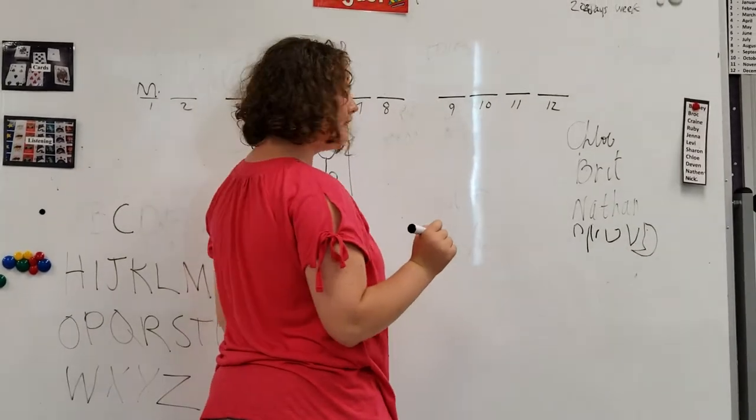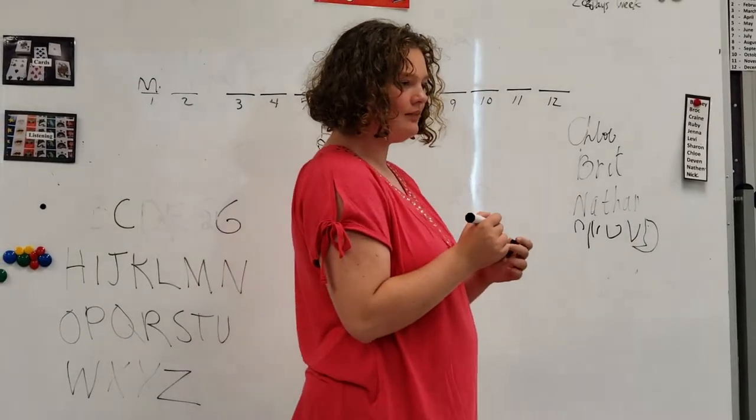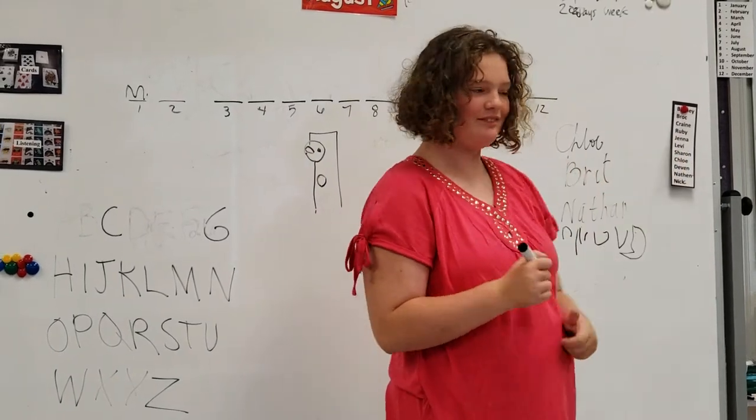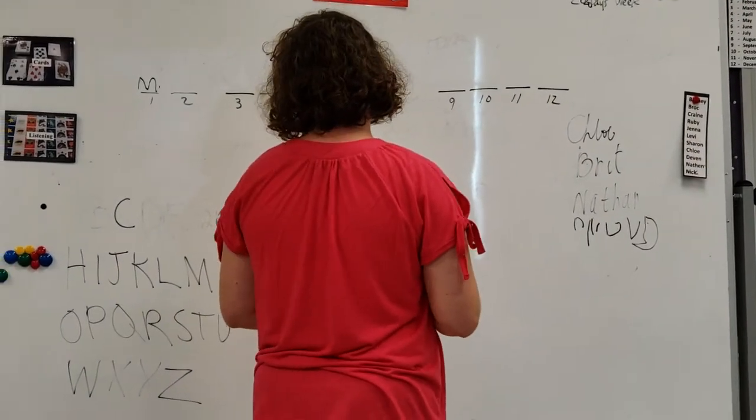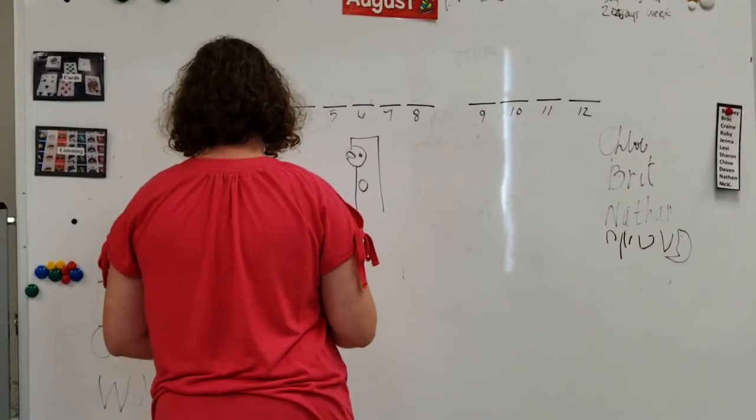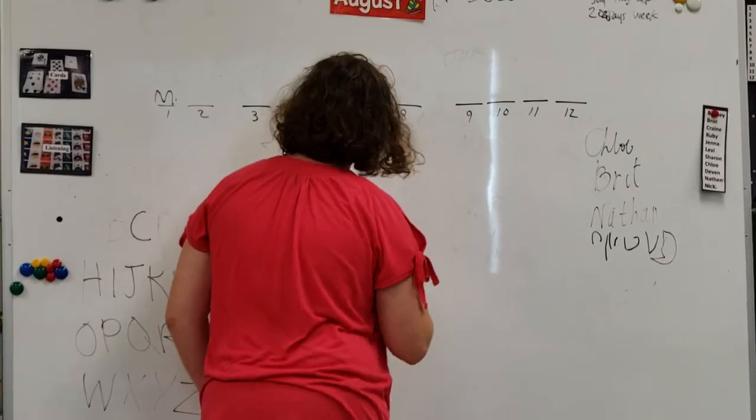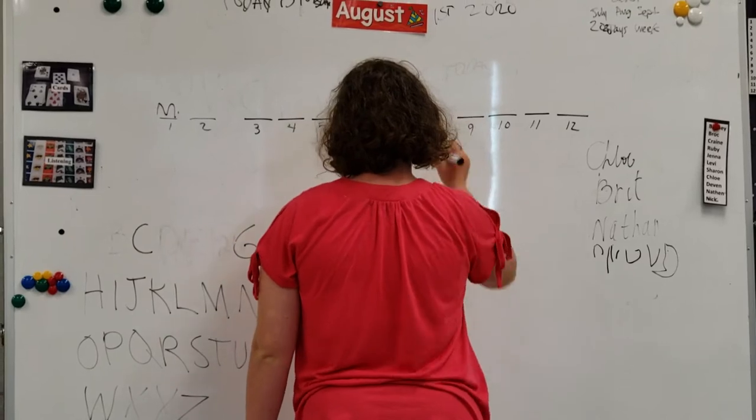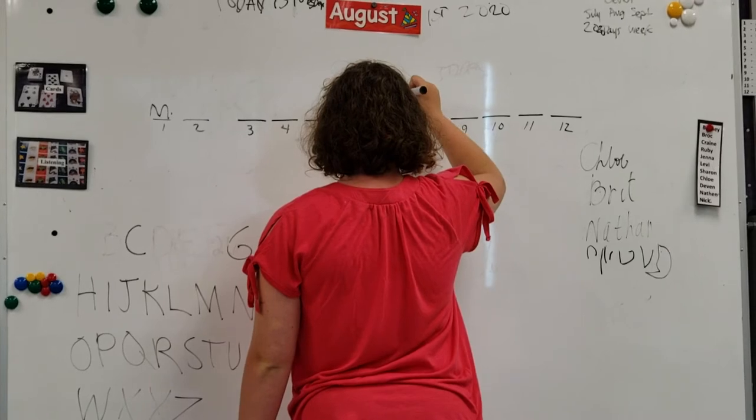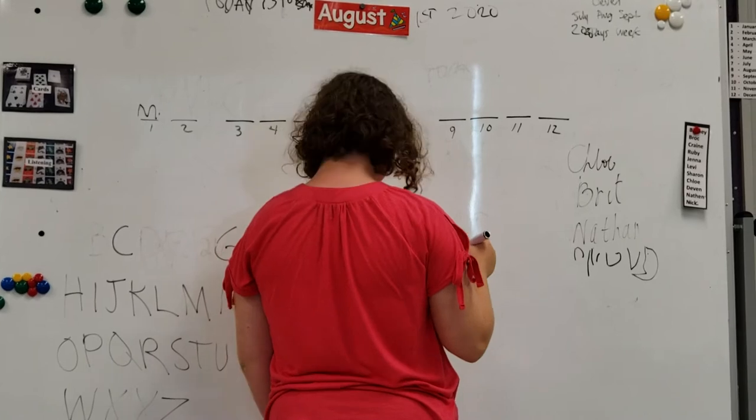And then ask Chloe. Chloe, is there an E? Yes. Number 8. Yes, number 8. Can you put an E on number 8? Okay, good. Now ask Britt.